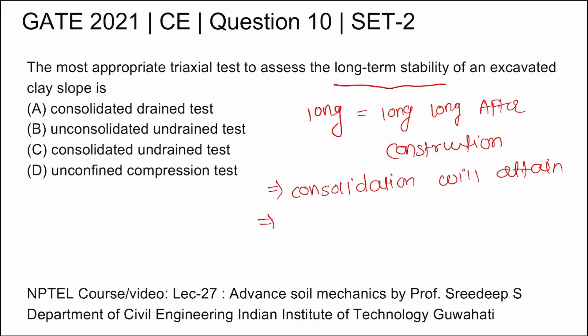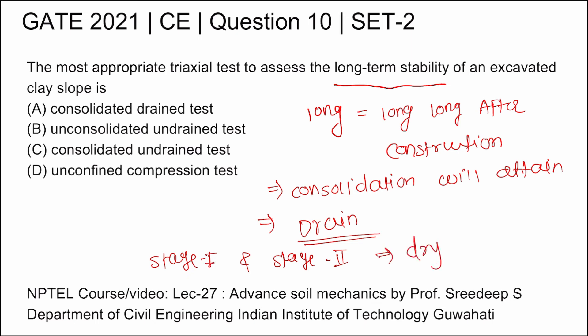Consolidation happening means the soil will be in a drained state. The water will drain and the soil will be completely dry in both stages — stage 1 and stage 2. In both stages the soil will be in a drained state, meaning water will be drained.